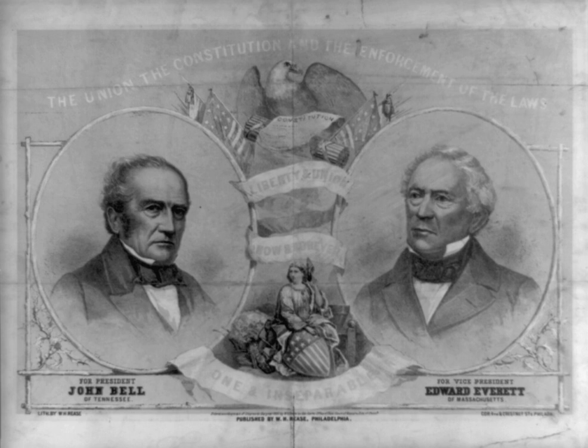The party hoped that by not taking a firm stand either for or against slavery or its expansion, the issue could be pushed aside. John J. Crittenden and other unionist congressmen organized the 1860 Constitutional Union Convention, which met in May 1860. The convention nominated John Bell of Tennessee for president and Edward Everett of Massachusetts for vice president.